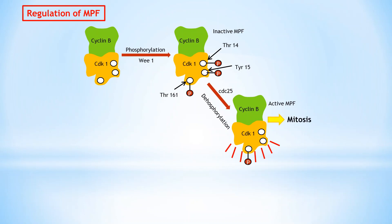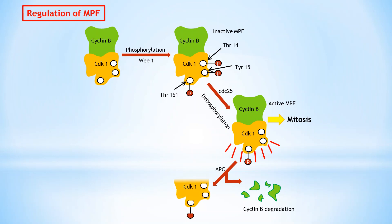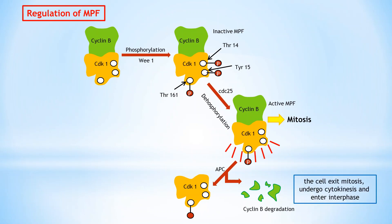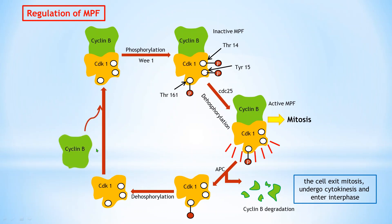Once MPF becomes activated, the CDK1 protein kinase phosphorylates a variety of target proteins that initiate the events of M phase. CDK1 activity also triggers the degradation of cyclin B, which occurs as a result of ubiquitin-mediated proteolysis. An ubiquitin ligase called the anaphase promoting complex or APC, activated by MPF, ubiquitinates cyclin B; as a result CDK1 becomes inactivated. This leads the cell to exit mitosis, undergo cytokinesis, and again enter interphase, where cyclin B protein accumulates again and in G2 phase forms a complex with CDK1, re-forming MPF.